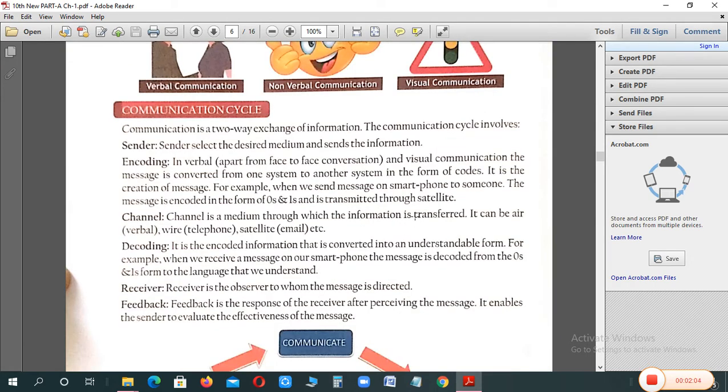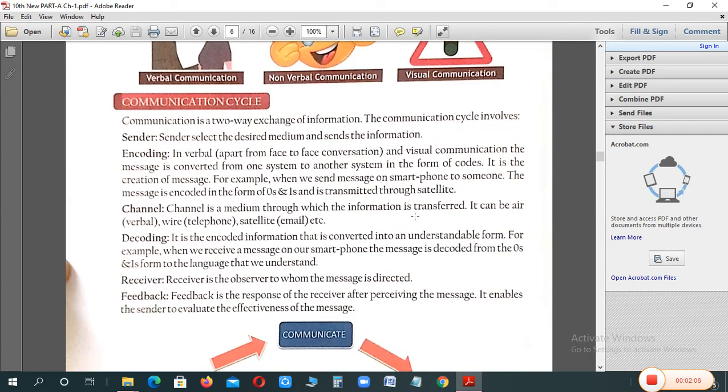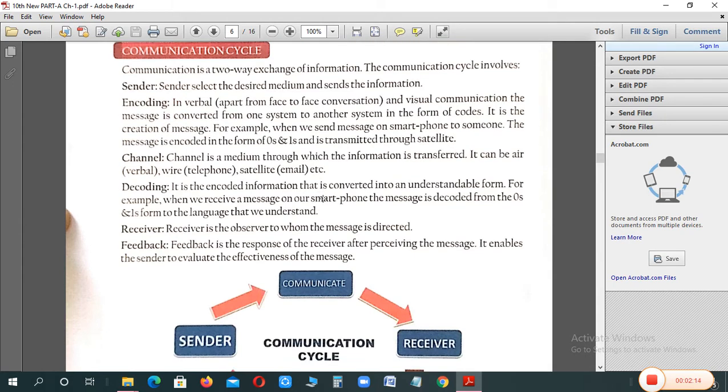Now, beta, what is communication cycle? Communication done kaisi hoti hai? Communication two-way exchange hoti hai, information. One, ek person nahi kar sakta, communication, two-way exchange hoti hai. Isi liye, isme kaun-kaun se elements hoti hai, beta: sender, jo aapka message send karta hai, jo information ko start karta hai. Encoding,